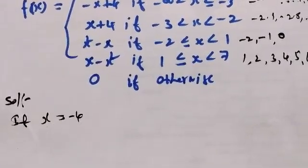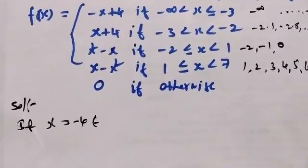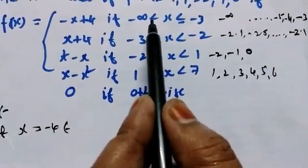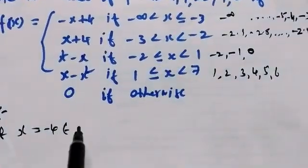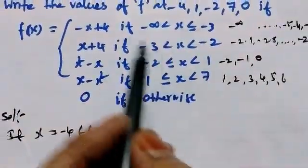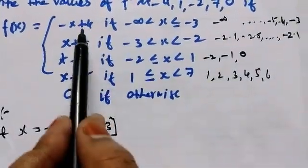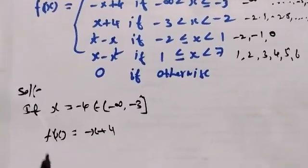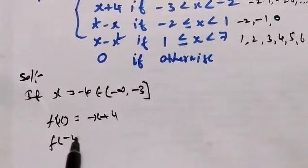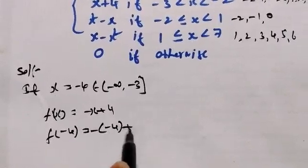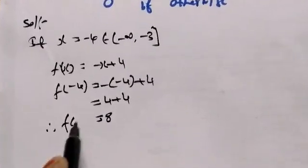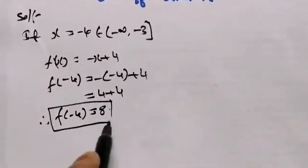If x is equal to minus 4, where is it? Minus 4 falls in the interval closed up to minus 3. That closed interval up to minus 3 is equal to minus 3. So if x is equal to minus 4, then minus 4 gives us minus 4 equal to 8.